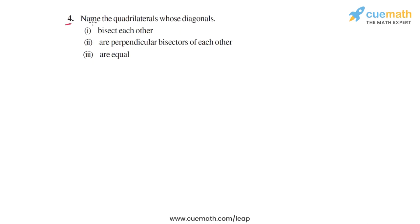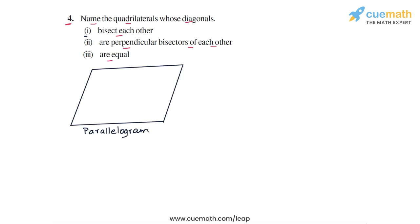In question 4, we have to name the quadrilaterals whose diagonals bisect each other, are perpendicular bisectors of each other, and are equal. Let us start with the first part: the quadrilaterals in which the diagonals bisect each other. Those quadrilaterals are parallelograms, because we know that whenever in a quadrilateral the diagonals bisect each other, the quadrilateral must be a parallelogram.